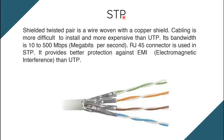STP, also known as Shielded Twisted Pair, provides better protection against EMI compared to UTP because UTP does not have a copper shield. STP cabling is more difficult to install and more expensive than UTP. Its bandwidth is 10 to 500 Mbps (megabits per second) and the RJ-45 connector is used with STP. STP is twisted but has shielded protection, giving it better protection against electromagnetic interference.